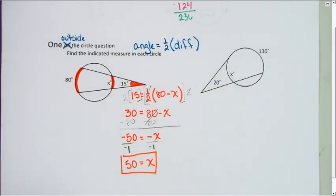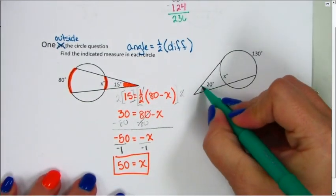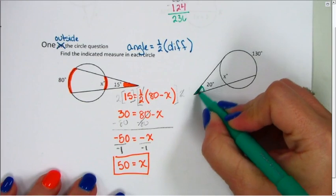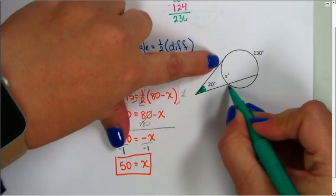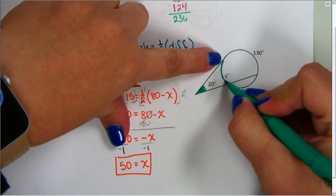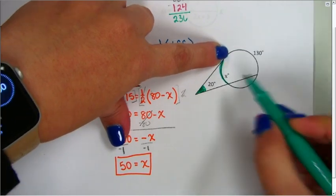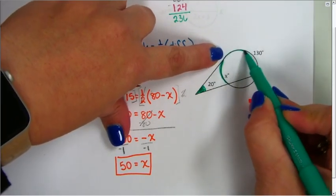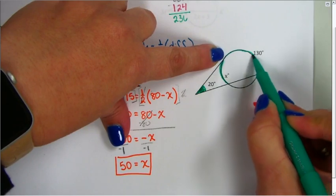Let's look at the next one. Very similar problem. My angle is outside the circle, it's 20 degrees. The first intercepted arc I come to is x, and the next intercepted arc I come to is 130 degrees.